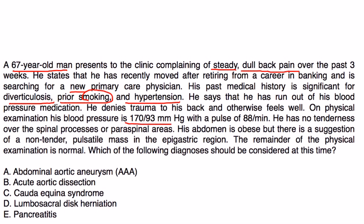Physical exam: blood pressure is 170 over 93, pulse is 88. He has no tenderness over the spinal process or paraspinal areas. Abdomen is obese, but there is a suggestion of a non-tender pulsatile mass in the epigastric region. The remainder of the physical exam is normal.